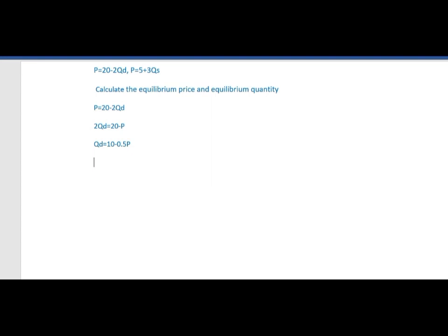And then we rewrite the function of the supply curve. P equal to 5 plus 3Qs, so minus 3Qs equal to 5 minus P, therefore Qs equal to 5 minus P divided by minus 3, equal to minus 1.67 plus 0.3P.